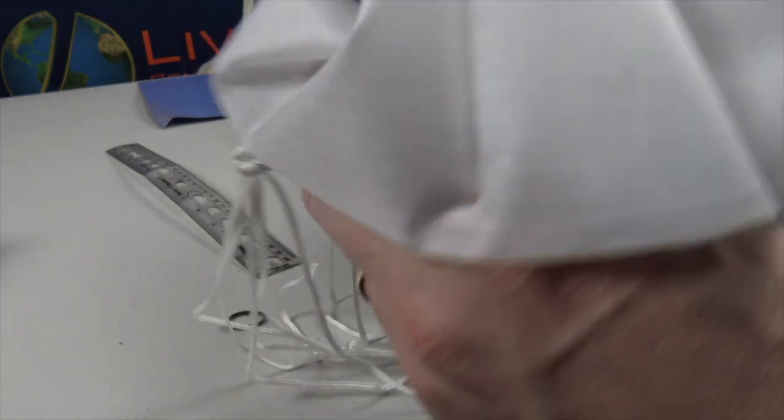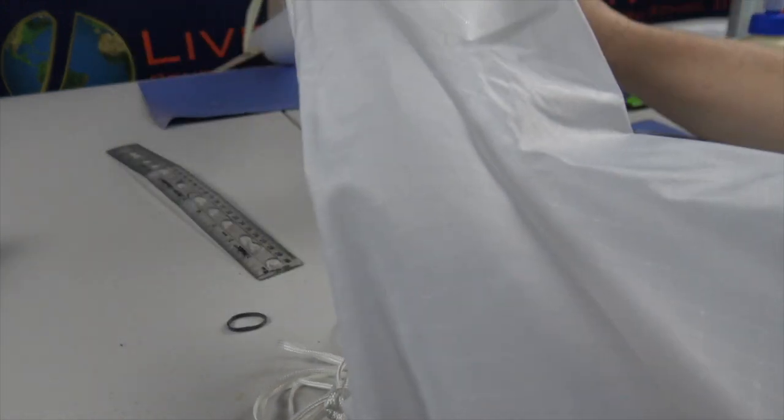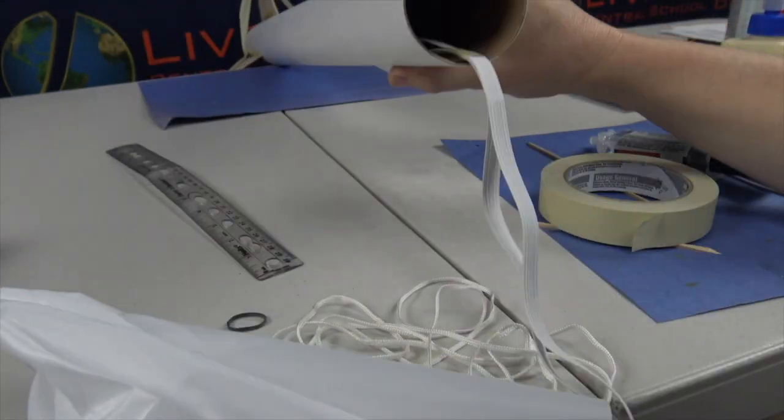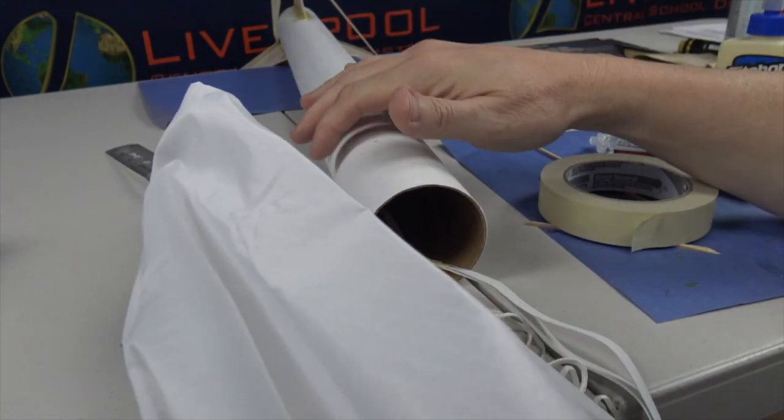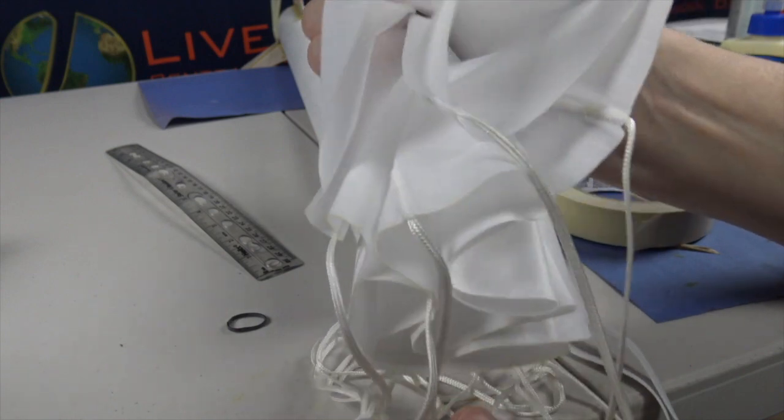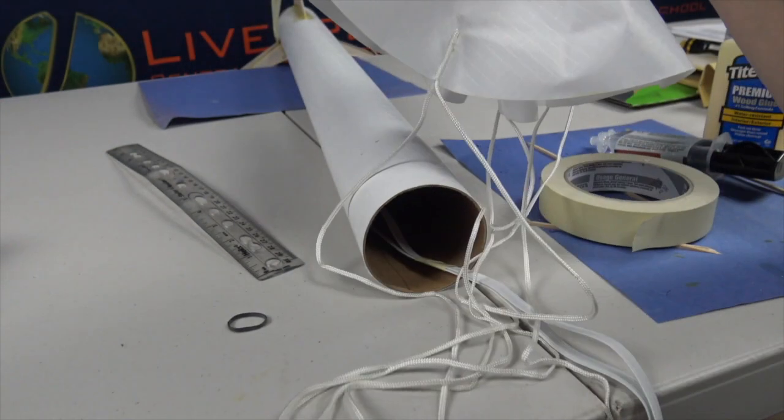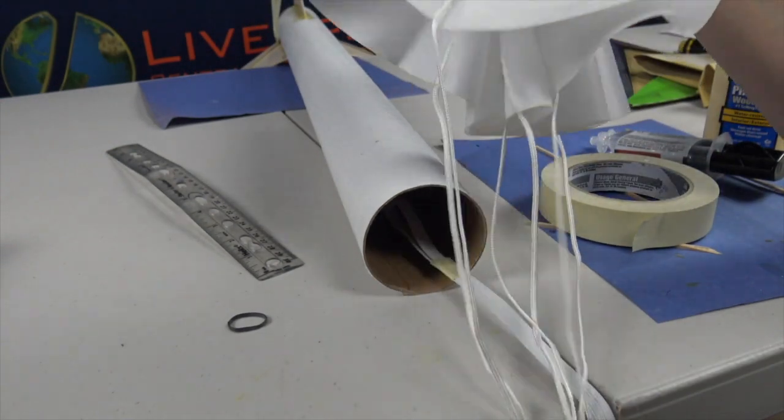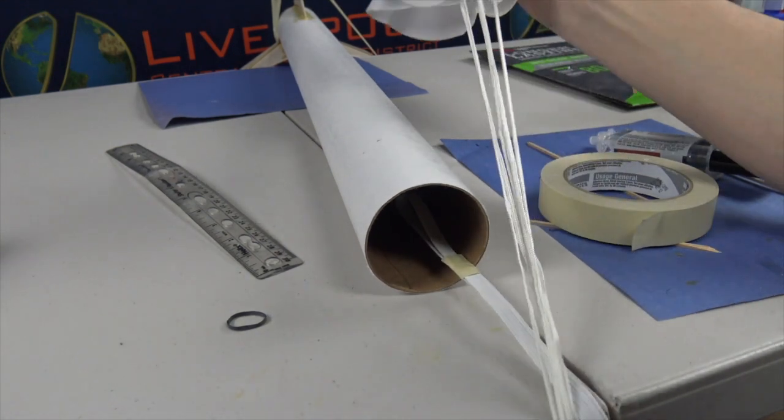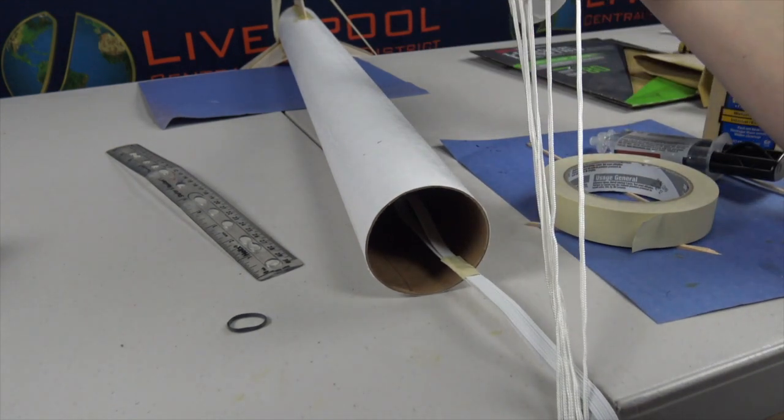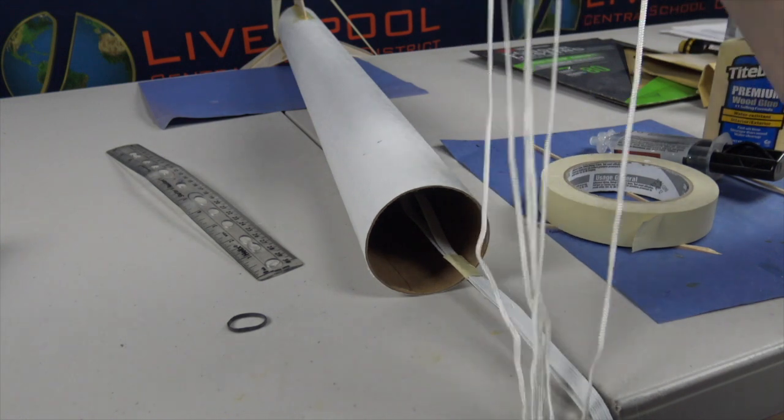I'm not going to put my parachute into my body tube just yet. I want to make sure that epoxy is good and dry in there before I slide my parachute in. If not, you can end up with an issue with your parachute getting glued and that can cause problems with your recovery system. And your parachute is your recovery system. So if you're speaking with the judges and they ask you what your recovery system is, your recovery system is your parachute.